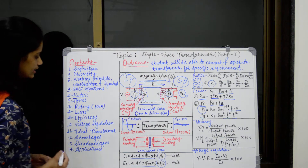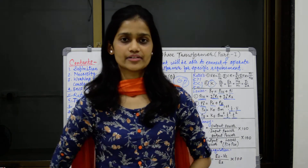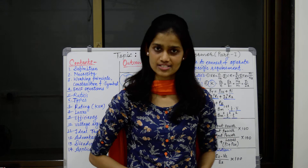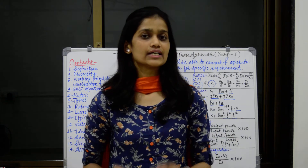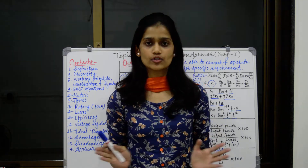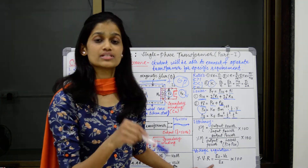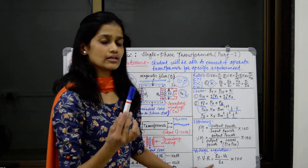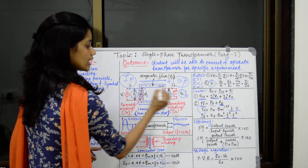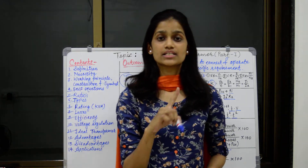Next is the ideal transformer. Which transformer can we call ideal? A transformer having 100% efficiency. 100% efficiency means both iron and copper losses in that transformer must be 0%. The voltage regulation must also be 0, meaning better voltage regulation. And the winding resistances — both primary and secondary — of an ideal transformer must be 0.